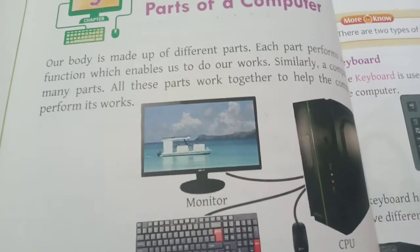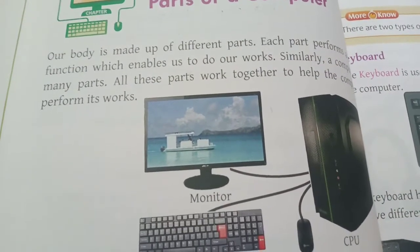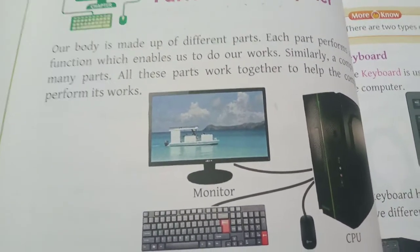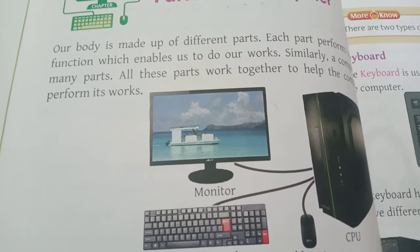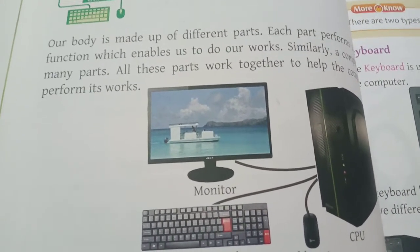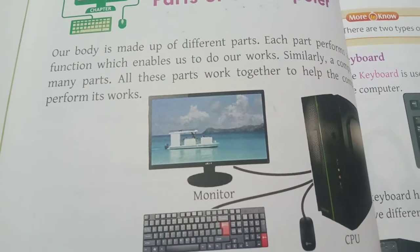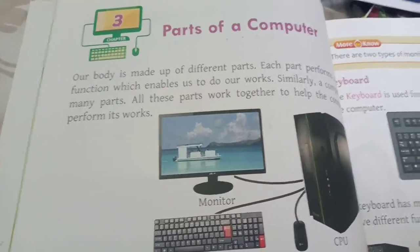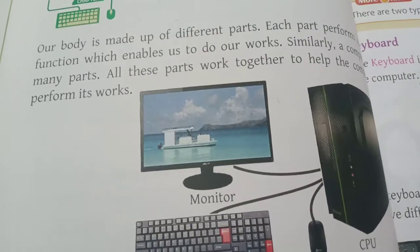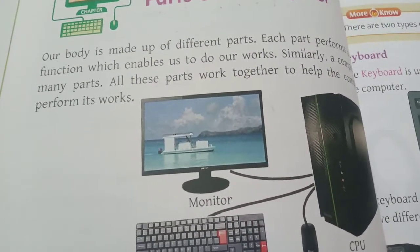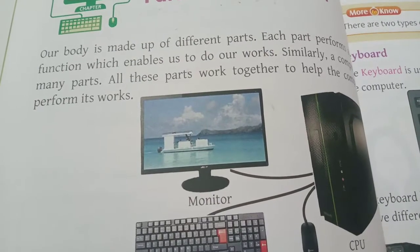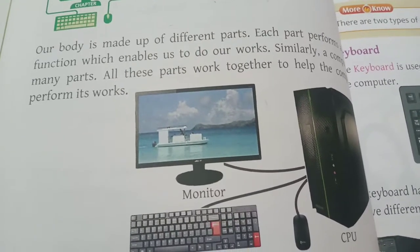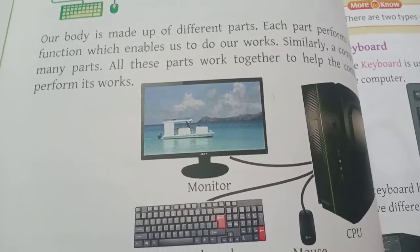Our body is made up of different parts — hands, legs, eyes, mouth, face — all these are different parts of our body. Like that, each part performs a function which enables us to do our work. Legs are for walking, mouth is for eating and talking. Similarly, a computer also has many parts, and all these parts work together to help the computer perform its work.